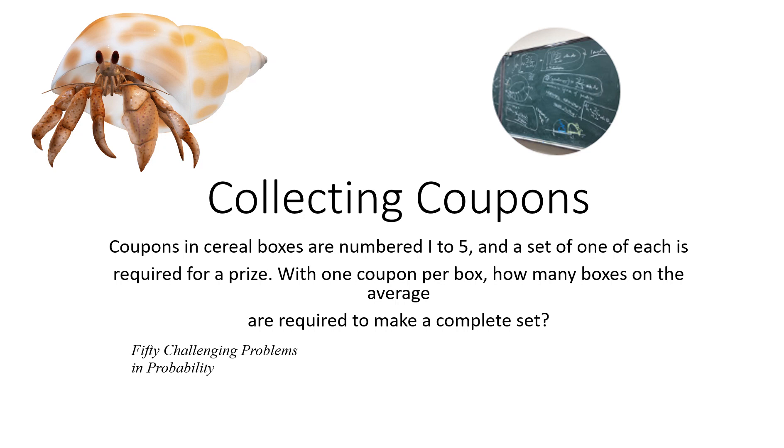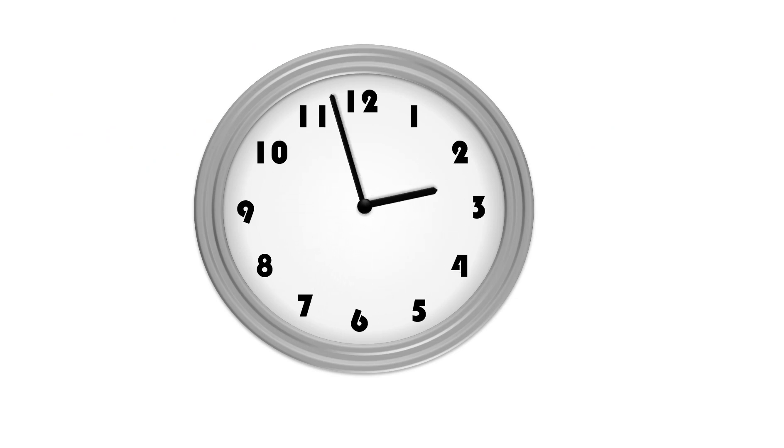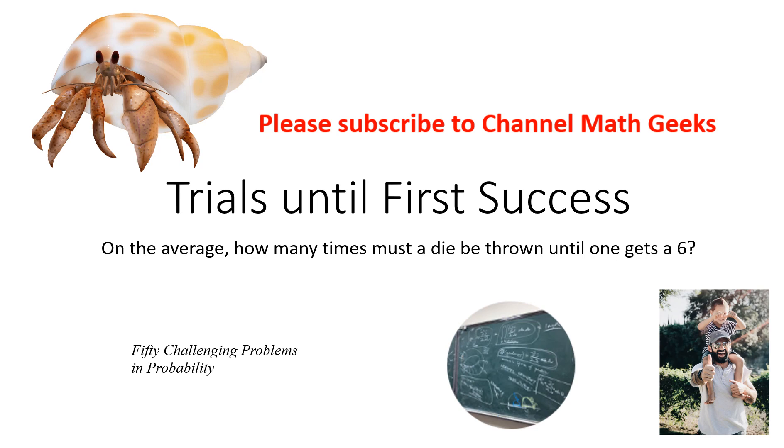To solve this, we use the result from the previous video. Remember, we proved that how many times must a die be thrown until one gets a 6? The answer is 6.